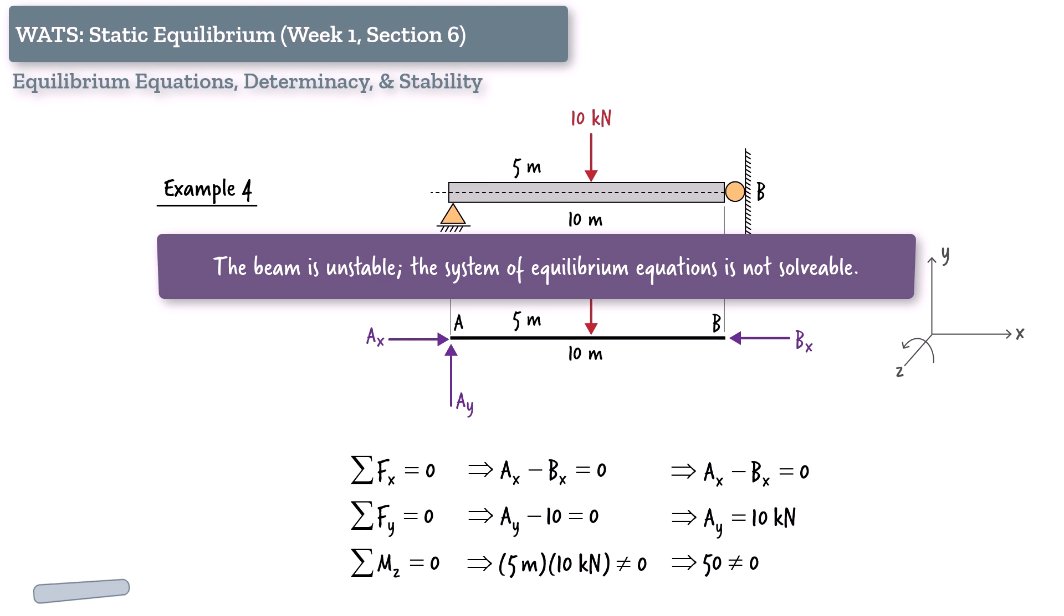This highlights a critical lesson. Matching the number of unknowns to the number of equations is not enough. We must also check whether the equilibrium equations are actually satisfiable under all possible loading scenarios. So, when evaluating stability, don't stop at counting. Always ask whether the system can truly resist any applied load.